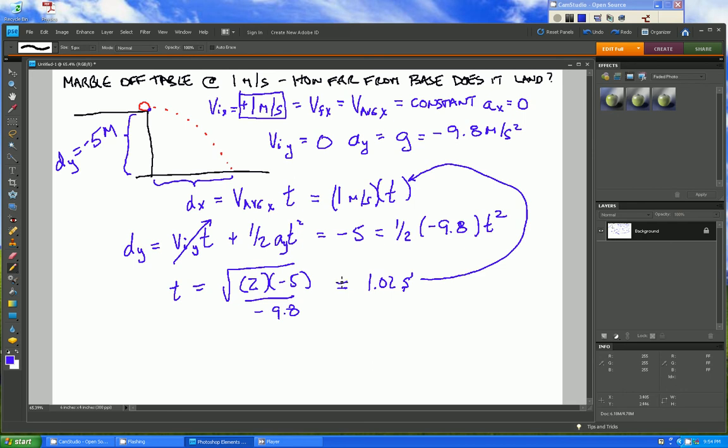We can then plug this into this relationship and effectively get that the distance in the x direction, which is what we were looking for, is 1 meter per second times approximately 1 second. And so that distance from the base of the table is about 1 meter.